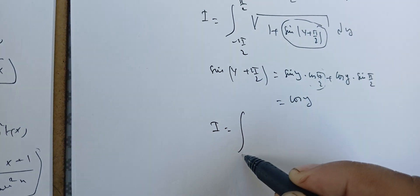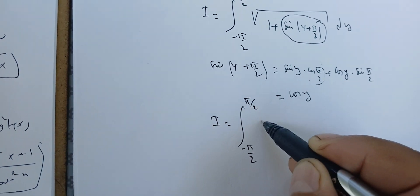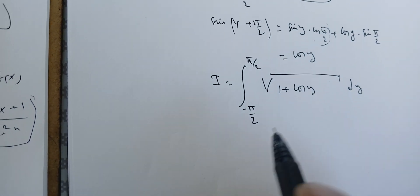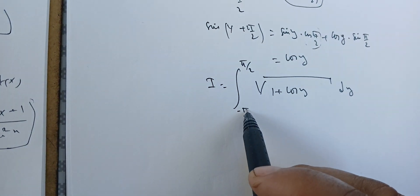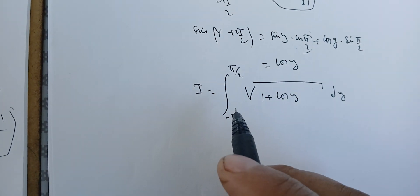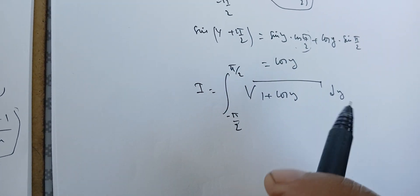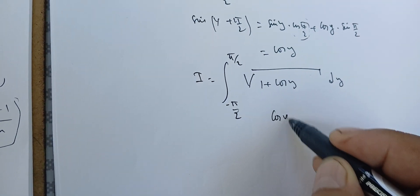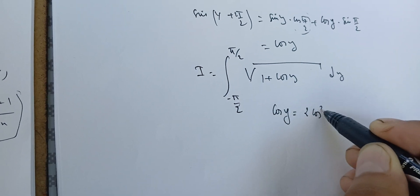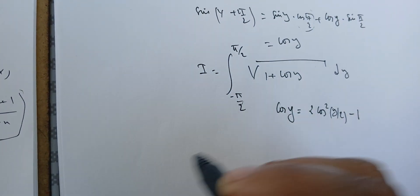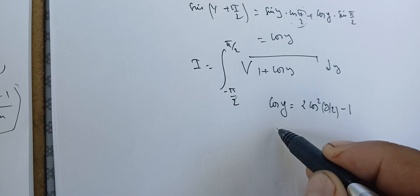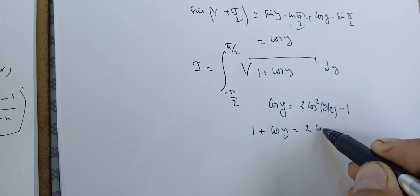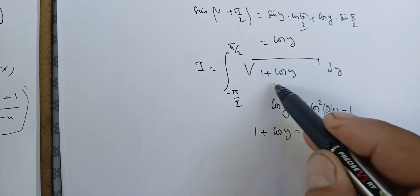So the integral I becomes the integral from minus pi over 2 to pi over 2 of the square root of 1 plus cosine y dy. Now I can use the trigonometric identity: cosine y equals 2 cosine squared of y over 2 minus 1. Adding 1 to both sides gives 1 plus cosine y equals 2 cosine squared of y over 2.